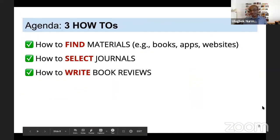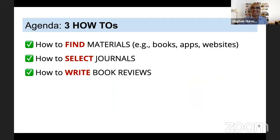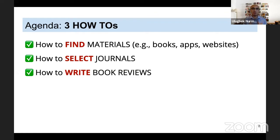Now, the agenda for today. I want to talk about three 'have-to's — I was inspired by Scott Thornbury's presentations. So: have-to find material, have-to select journals, and have-to write book reviews. Please note I use 'materials' and 'books' interchangeably. In our field nowadays, we are encouraged to use technology. There is a field catering for specialized audiences called computer-assisted language learning, or Language Learning and Technology journals, that frequently publish reviews of apps, language applications, and websites for language learning. So if you're interested in technology, you may want to find an app or website or technology-focused book and review it.